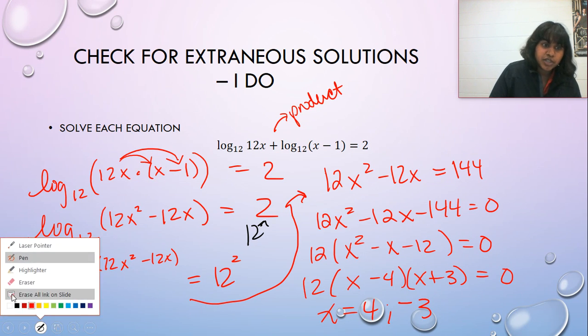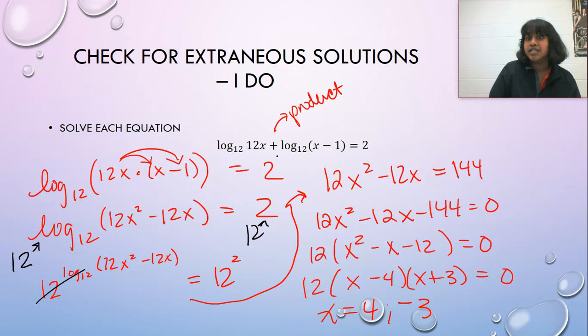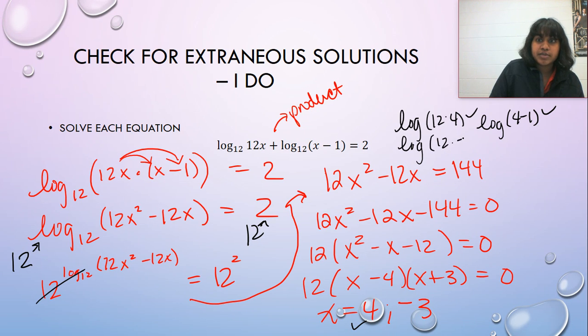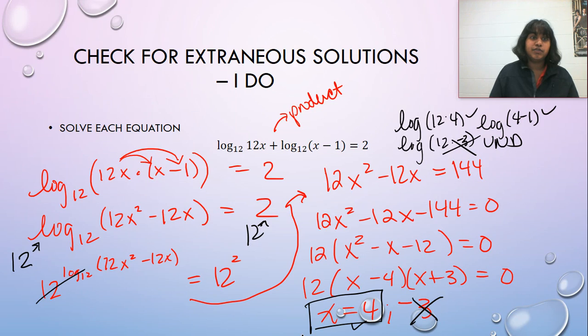But we have to confirm. So we check if four or negative three can undefine any of our logs. So if I test a log of four times 12, that's going to work. If I test log of four minus one, that's going to work. So four should be a true statement. Log of 12 times negative three immediately, this is undefined. That's not going to work. So this cannot be one of my answers. So my only answer is positive four. And that would be extraneous solutions. Every single time you have to verify that your problem will not undefine the original log, a.k.a. log of zero or log of a negative number.